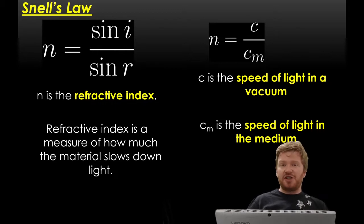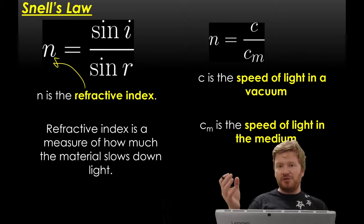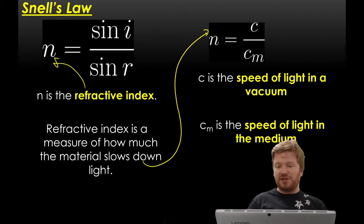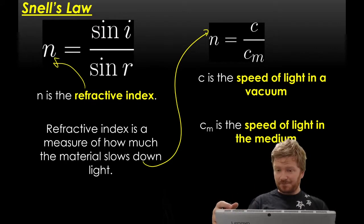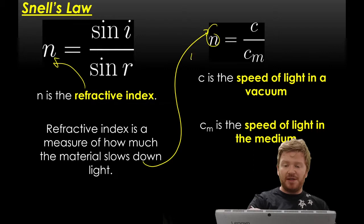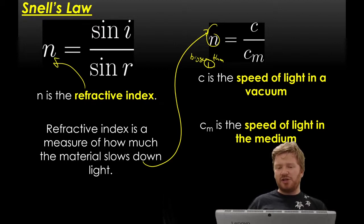So this is where we come into this idea of Snell's Law. Snell's Law tells us that n, the refractive index, is equal to sine i over sine r. It's a measure of how much material slows down light. I've got another equation for you, and that is C over C_m. C is the speed of light in a vacuum or air. C_m is the speed of light in the medium. For glass, it travels at about half the speed. By using that, you're going to find that n will always come out as a number bigger than one. If you ever get n as something smaller than one, something's gone wrong.